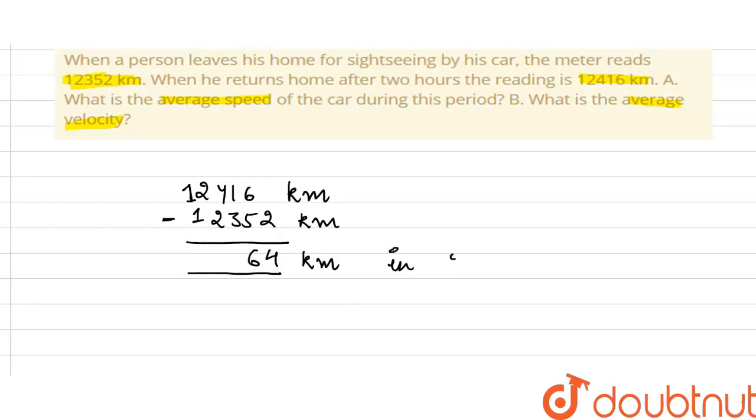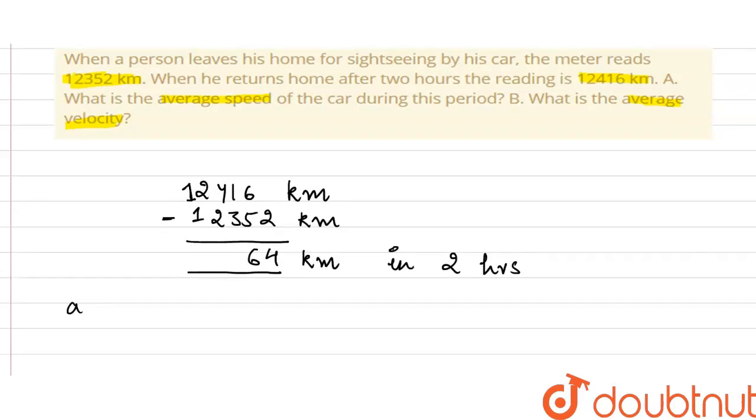In two hours. Now we know that the average speed is equal to the total distance traveled divided by total time interval.